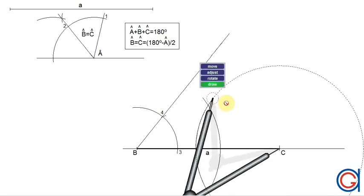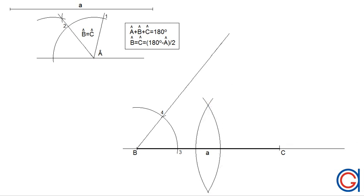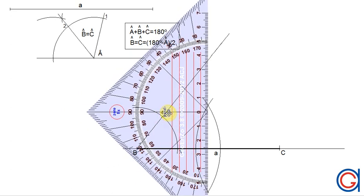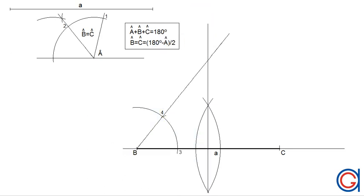Again, with the same radius, we set the compass on vertex C and we will scribe another arc which intersects the previously drawn arc at two points. Now we draw a vertical line through these two new intersections and elongate it until it cuts our previously drawn line at our new vertex A.